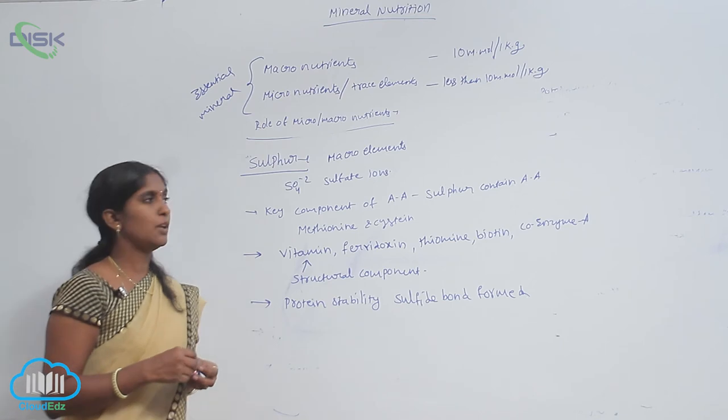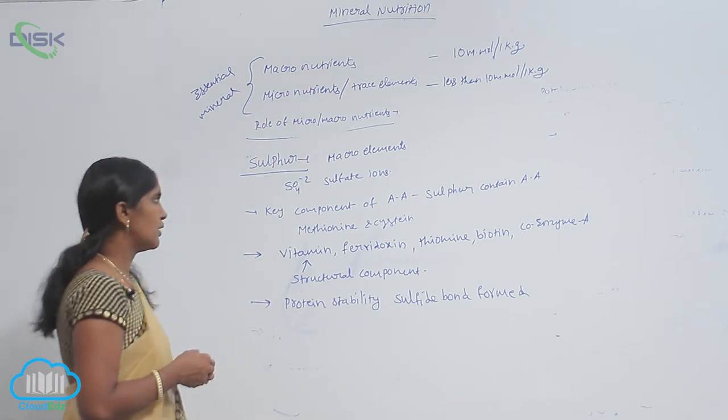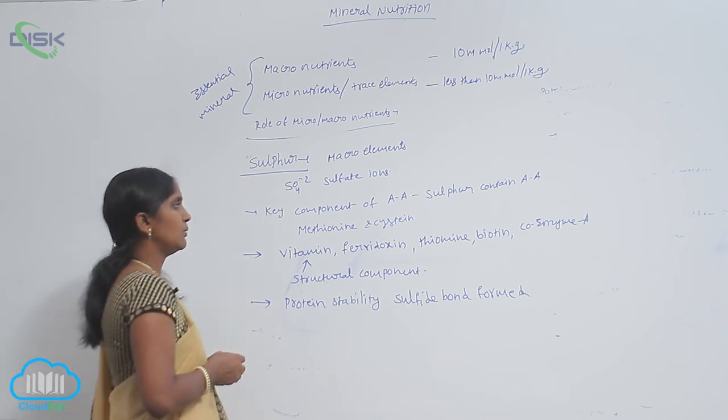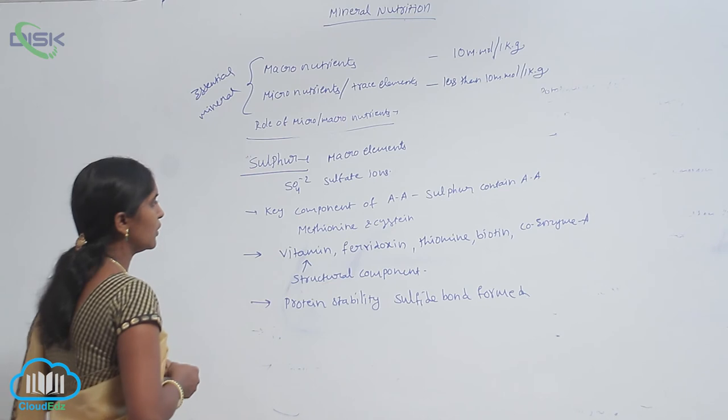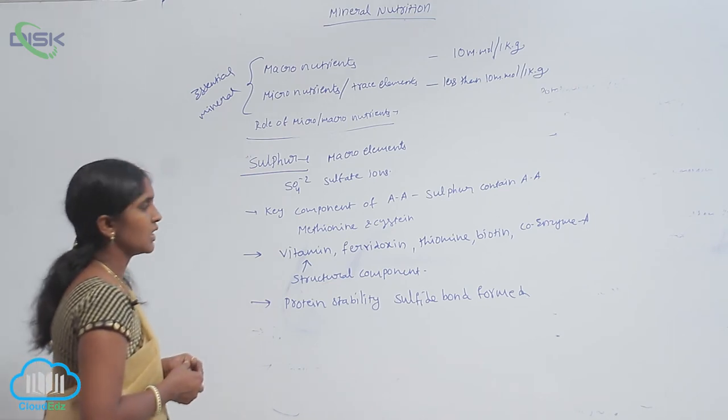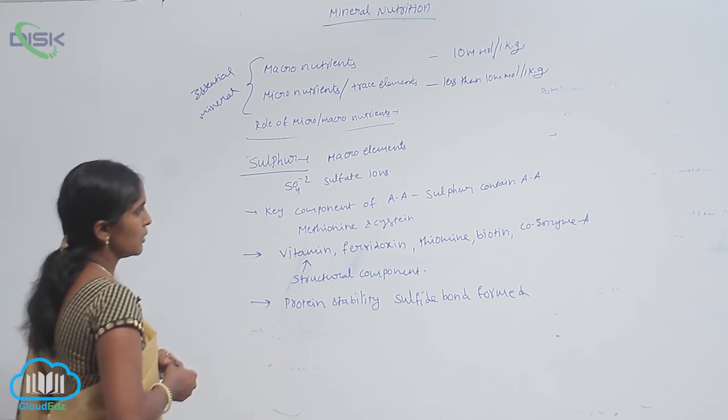Sulfur is a macroelement. The available form for plants is sulfate ions. It plays a key role in synthesis of methionine and cysteine amino acids because they are sulfur-containing acids with sulfur as a structural part.